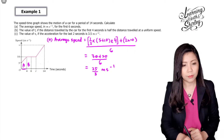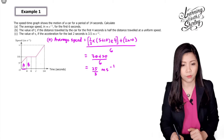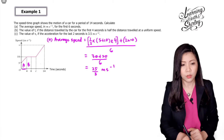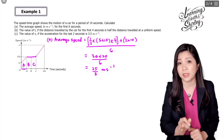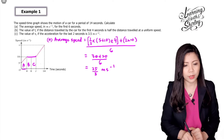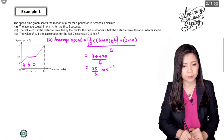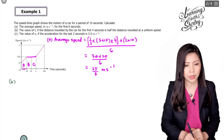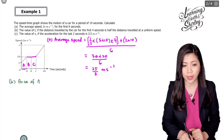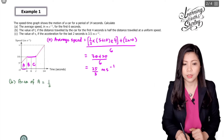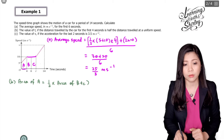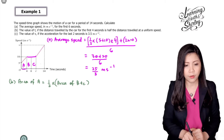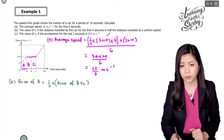For part B, find the value of T if the distance traveled by the car for the first four seconds is half the distance traveled at uniform speed. Uniform speed is here. I'll label areas B and C. I'm going to use the area of the trapezium: area A equals half times the area of rectangle B plus C. Area A is 30, so 30 equals half times (T minus 4) times 10.